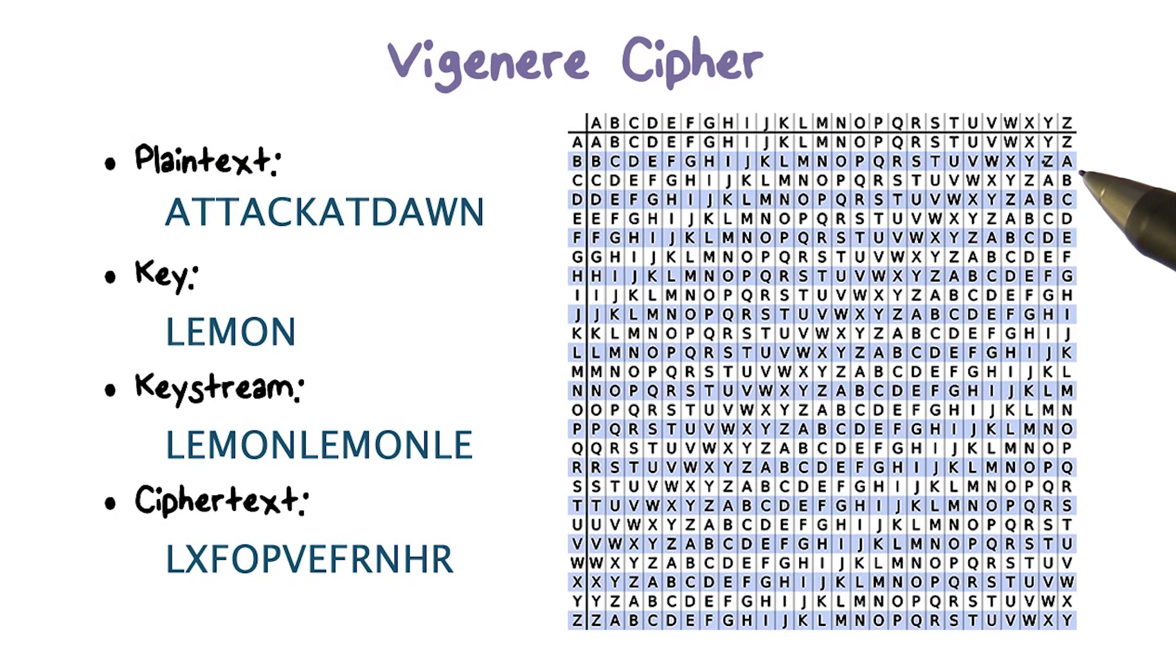Here's a real example of a polyalphabetic substitution cipher. It is called the Vigenere cipher. Vigenere cipher has a clever way of representing possible mappings from one letter to another as a matrix.